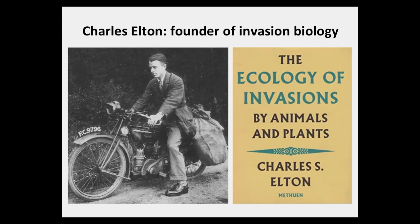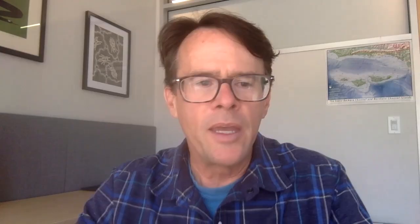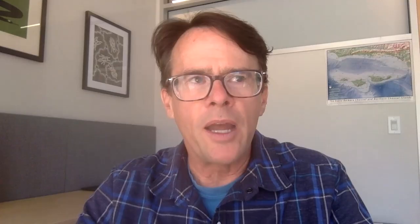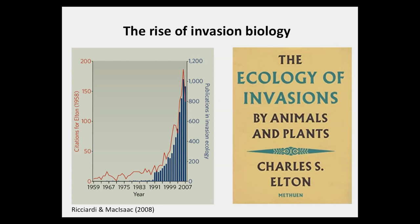Most ecologists would agree that the field of invasion biology started with the publication of The Ecology of Invasions by Animals and Plants by Charles Elton in 1958. Elton was a prominent English ecologist who studied population fluctuations and the structure of food webs. During World War II, he gave a series of broadcasts on BBC Radio about environmental harm caused by biological invasions, and after the war he collated this information into a book published in 1958 that largely anticipated the field of invasion biology.